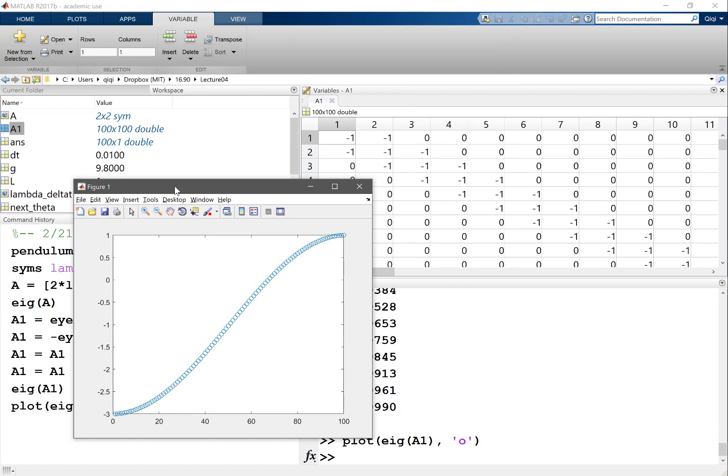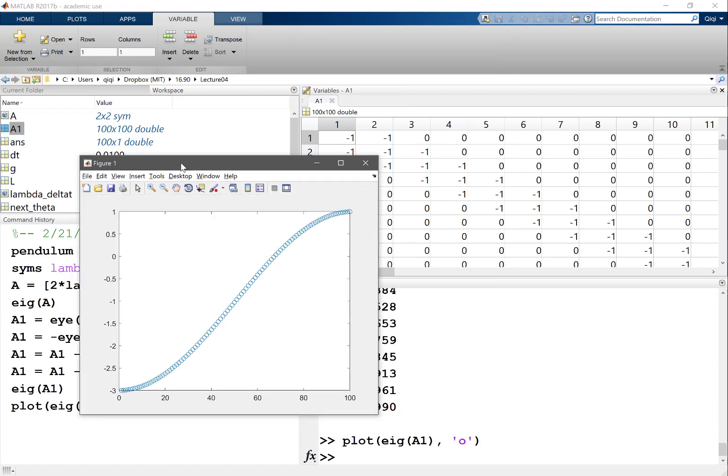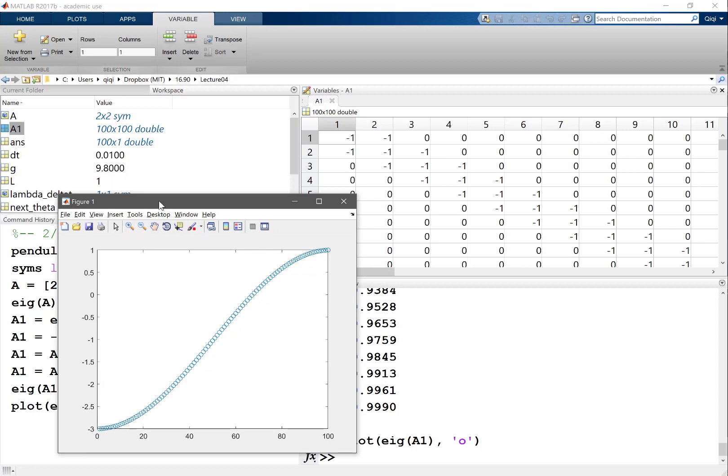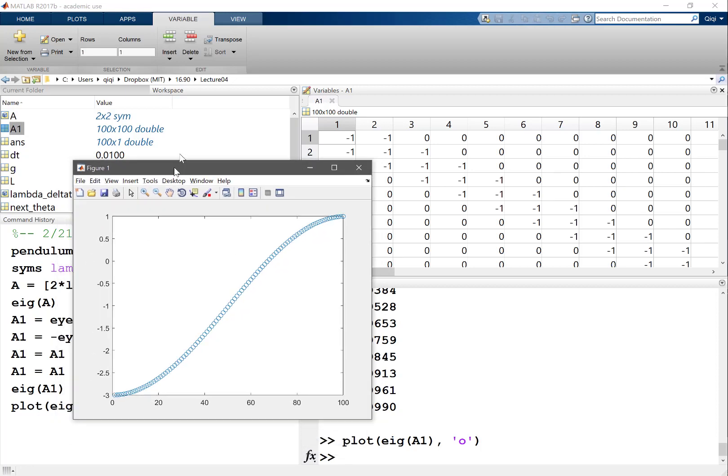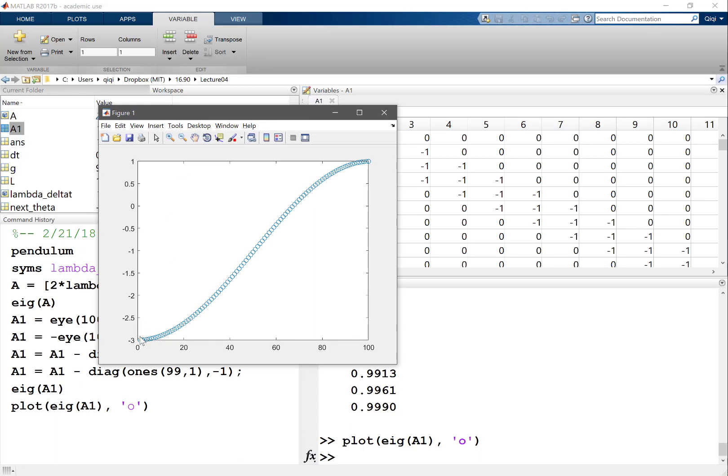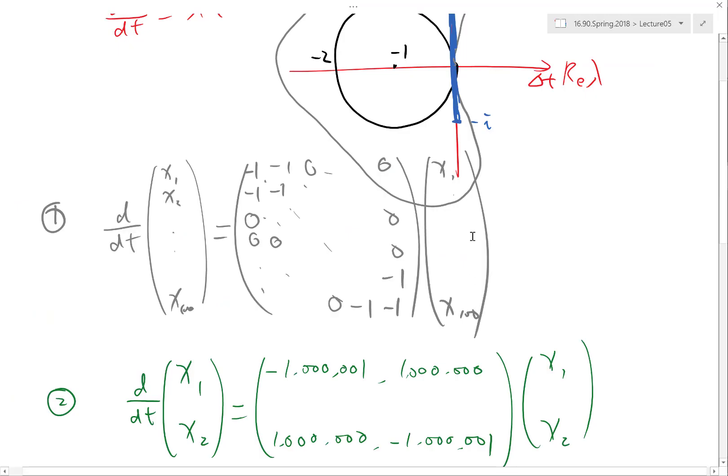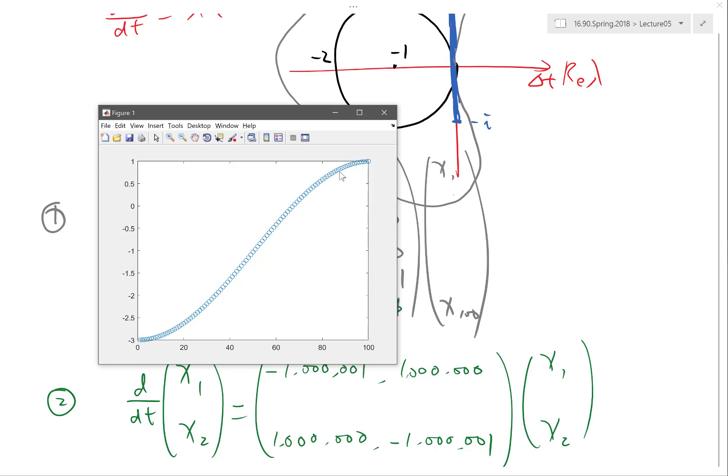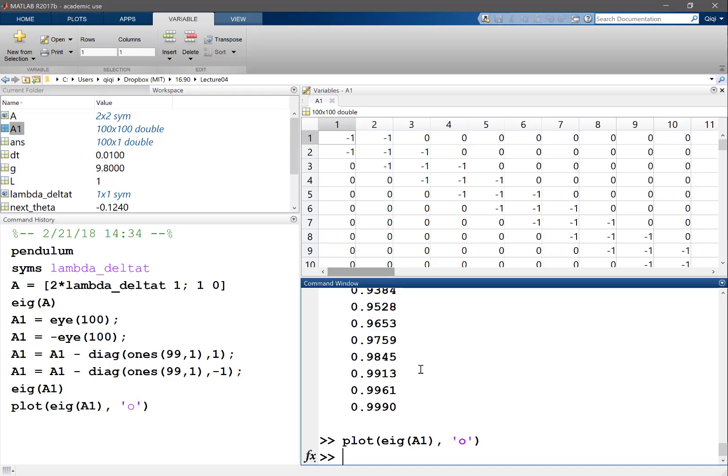So eig of A1. Let's actually plot it as circles. I get a bunch of eigenvalues. That's different from what I wanted to say. This one actually is going to be unstable because I have some eigenvalues positive. That's not what I want. Let me increase the diagonal entries to minus 3 to get it stable.